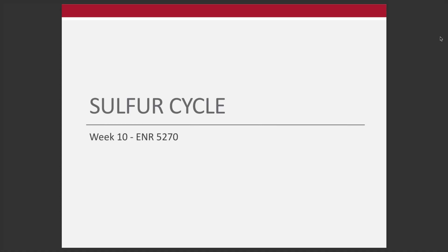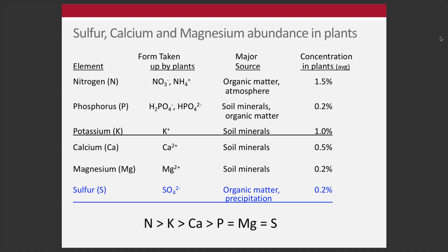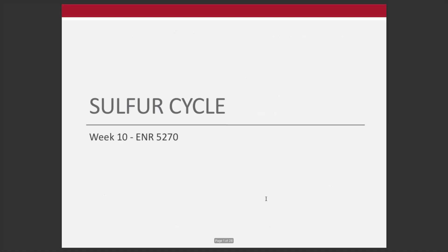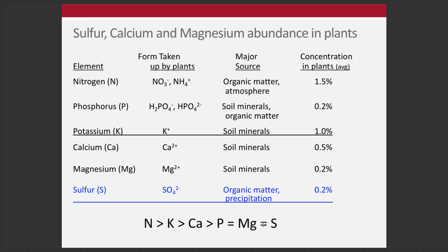Sulfur is considered a macronutrient. The primary form of sulfur taken up by plants is SO4-2 — sulfate ion. The primary source for this is organic matter, also some precipitation, particularly for our soils in our region. Thinking about the relative abundance of the six macronutrients: NPK is often considered the primary macros, and then calcium, magnesium, and sulfur are secondary macros. But sulfur really occurs in equal quantities as phosphorus and magnesium typically.